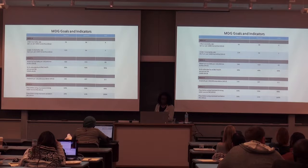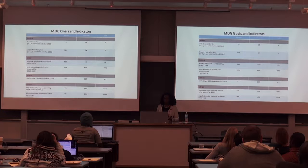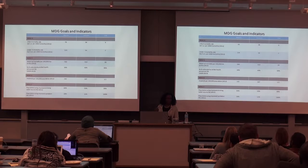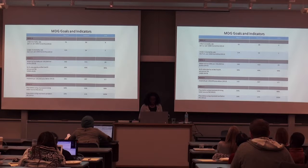Millennium Development Goal five is maternal mortality — the number of mothers who die during or just after childbirth. Nigeria has 560 per 100,000, Tanzania has 410, and the United States has 28. When I was looking at this recently, the 2012 numbers for the United States actually went up, which is a very bad sign. I teach health disparities, so I have to point that out.